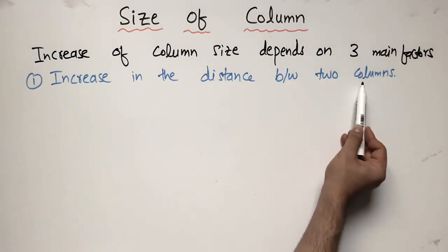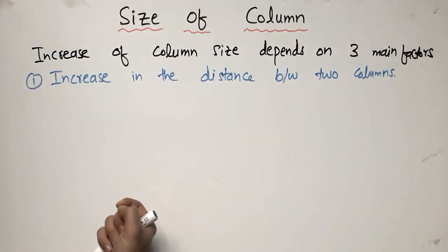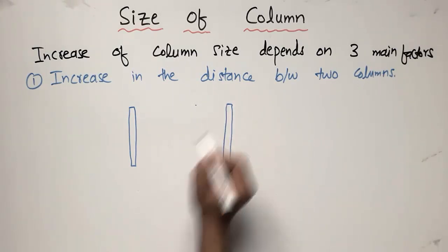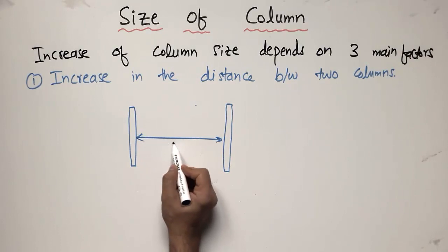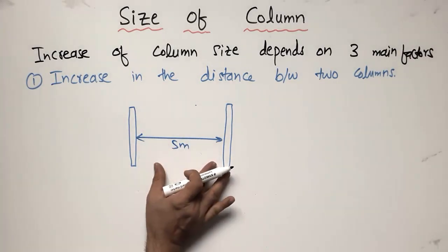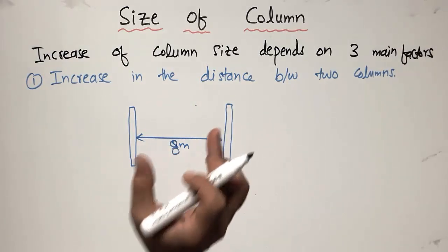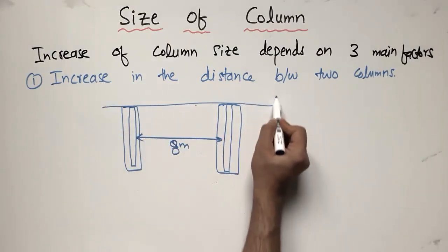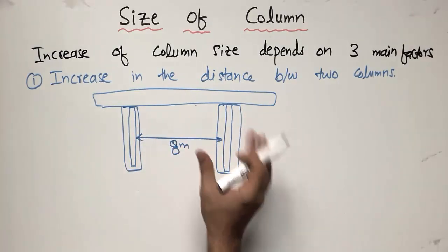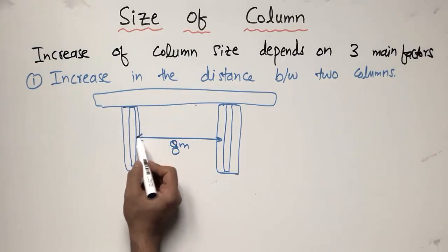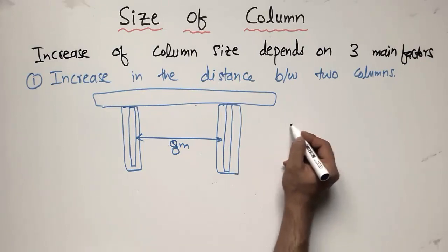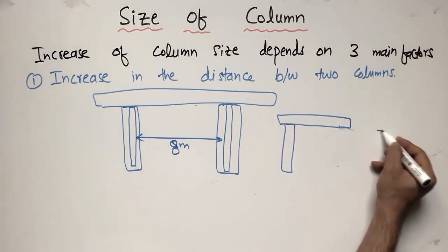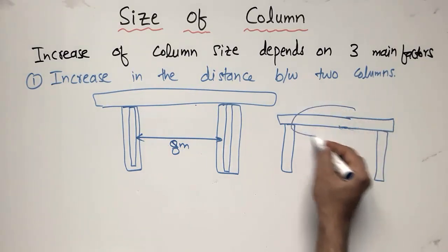The first factor is the increase in the distance between two columns. When there is an increase in the distance between two columns, we have to increase the size of the column. For example, if the column distance is 5 meters and you increase it to 8 or 9 meters, you must also increase the size of the column, because beams placed above the columns will transfer more load as the span increases.